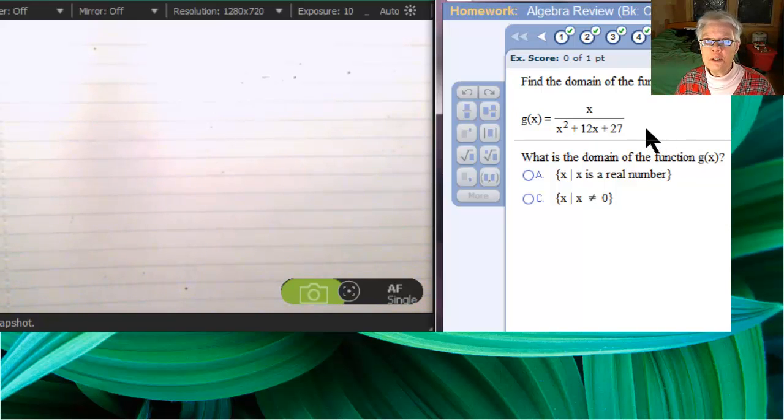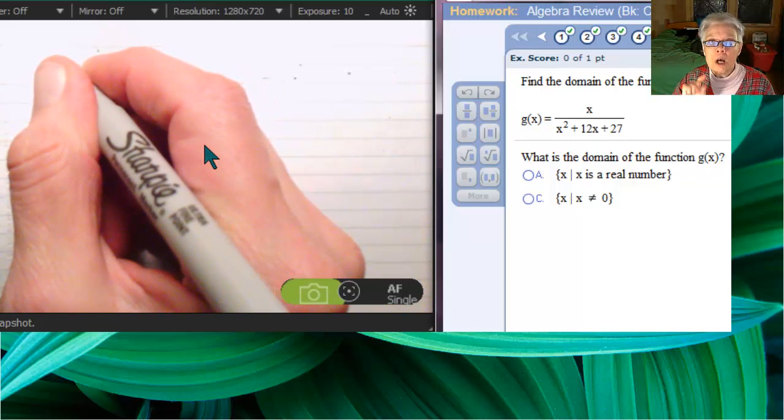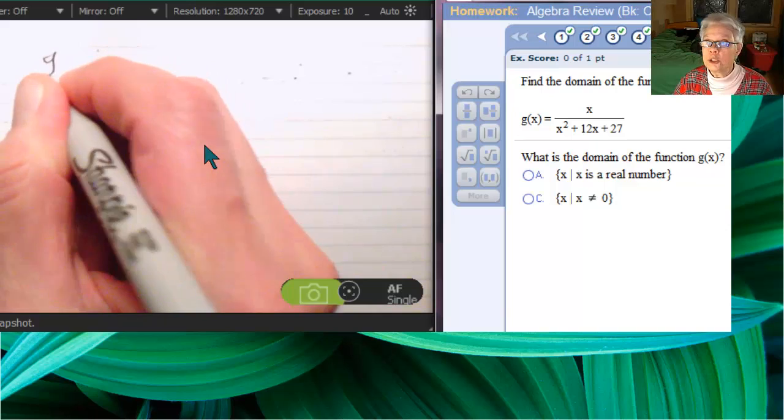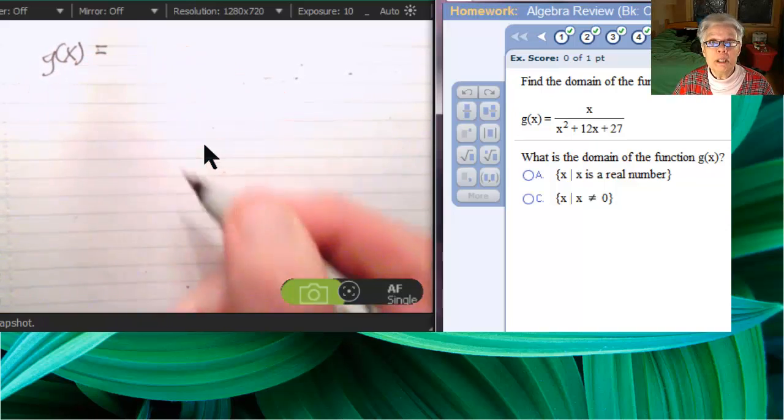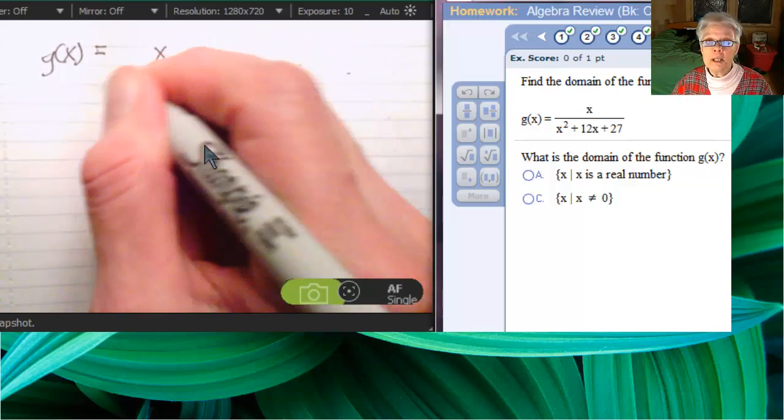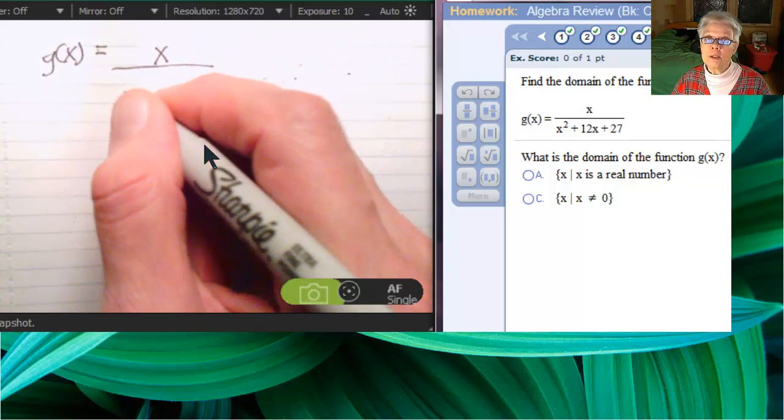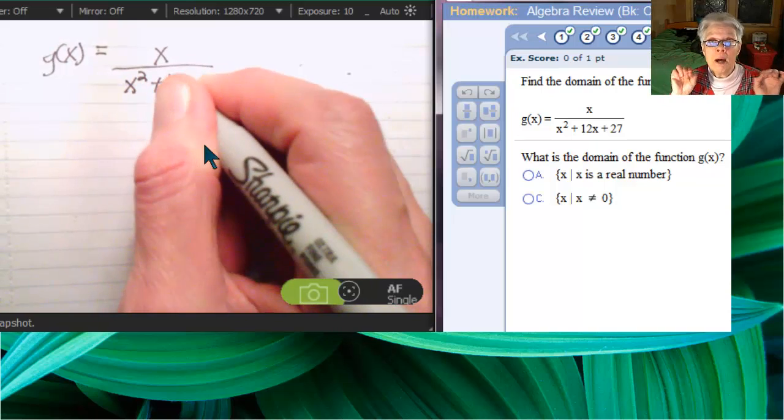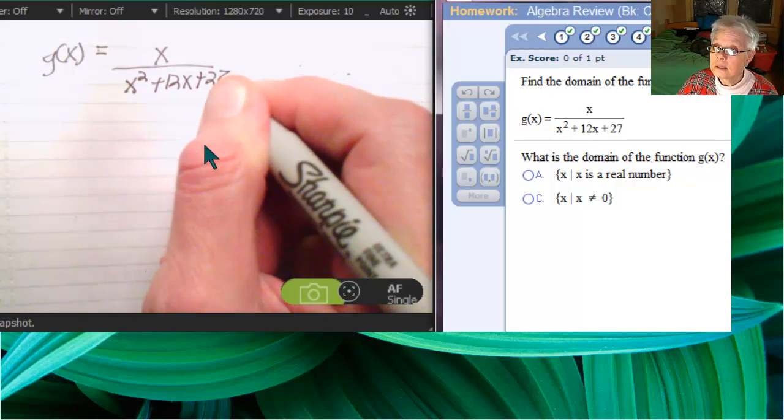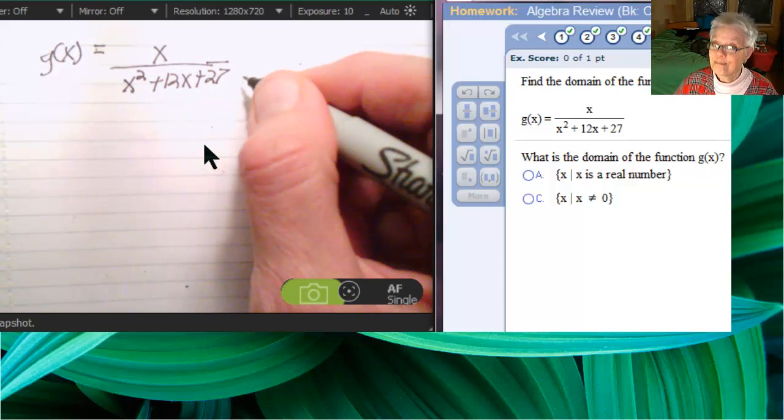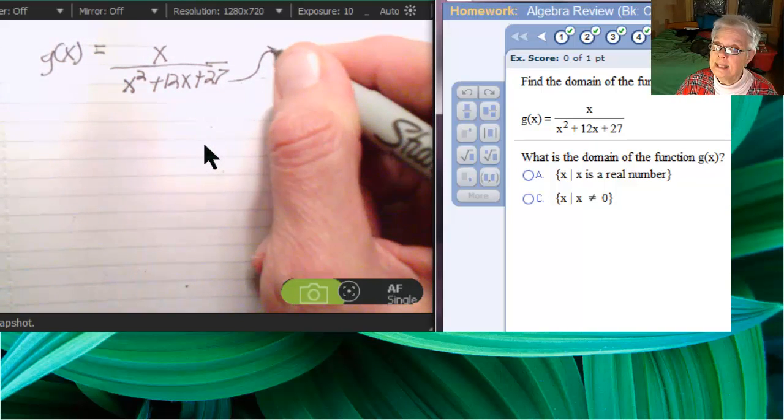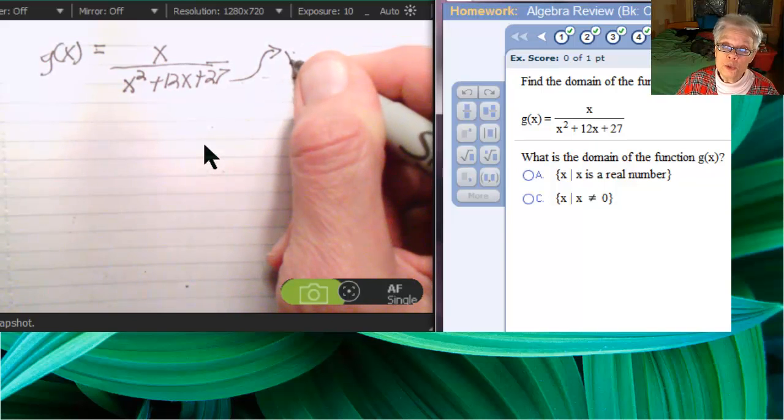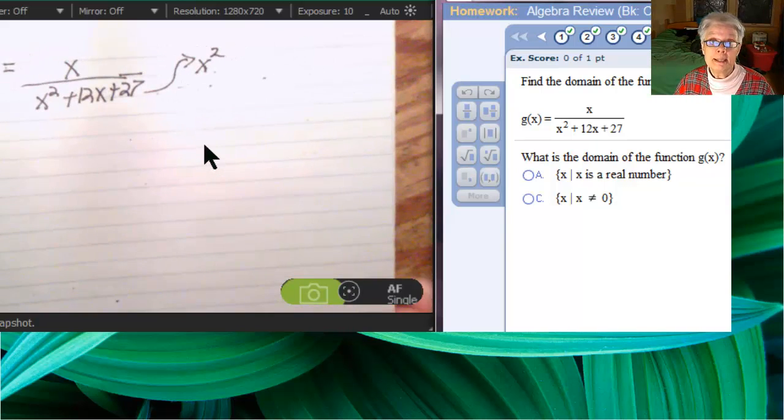We're going to talk about the domain of this rational function. What you do is you set the denominator equal to zero, solve for x, and those are the numbers that will cause the rational function to be undefined, because those will be the numbers that make the denominator equal to zero. So, we have to take those out of the domain. We're going to set x squared plus 12x plus 27 equal to zero and solve.